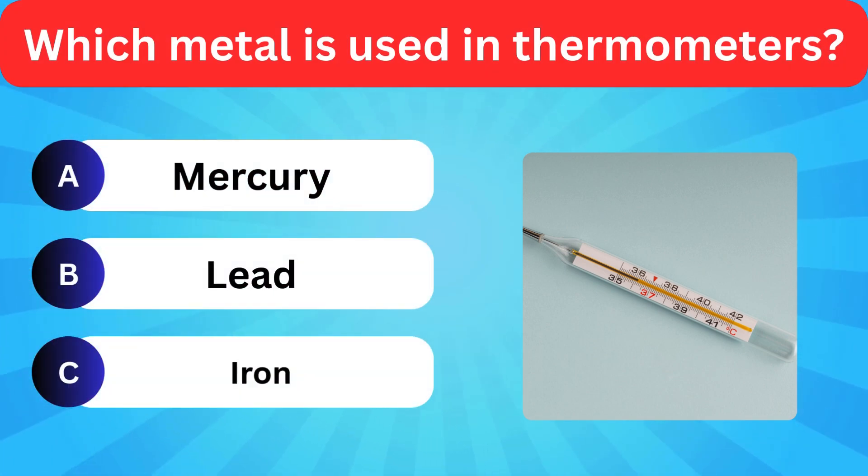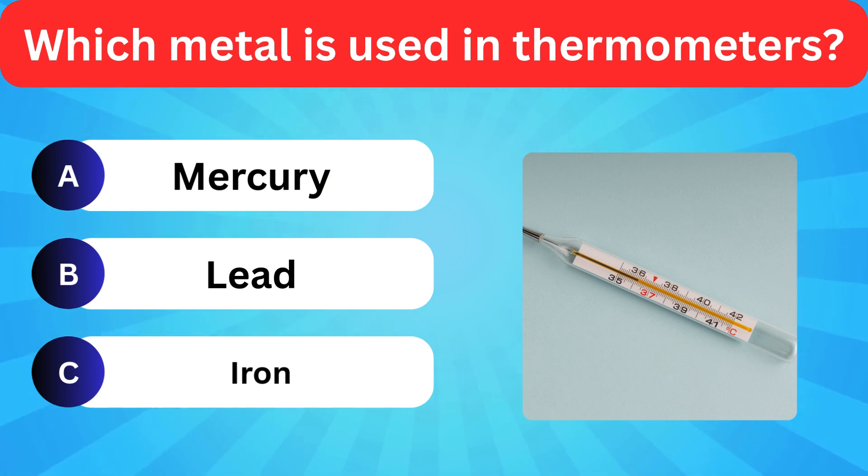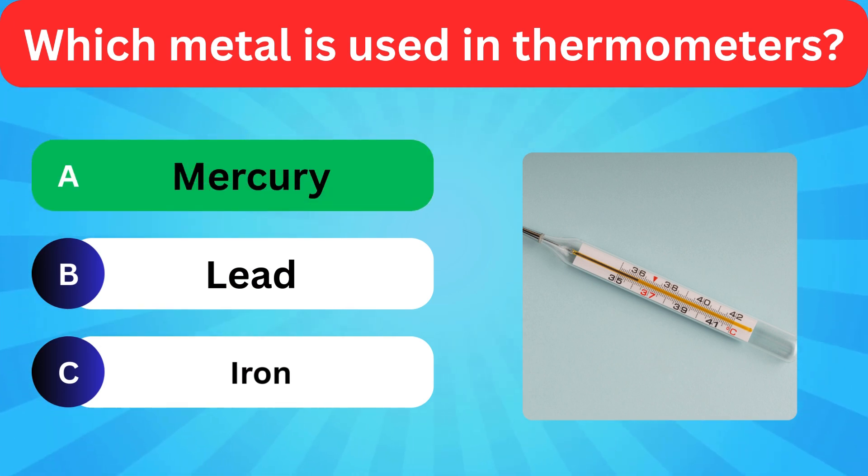Which metal is used in thermometers? Options: Mercury, Lead, Iron. Correct answer is mercury.